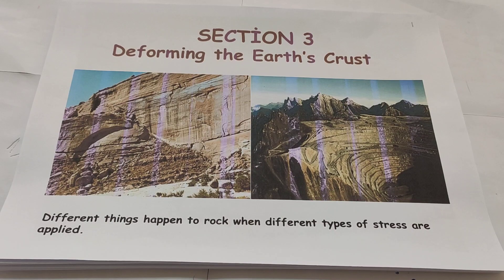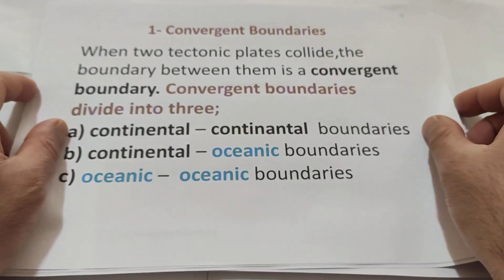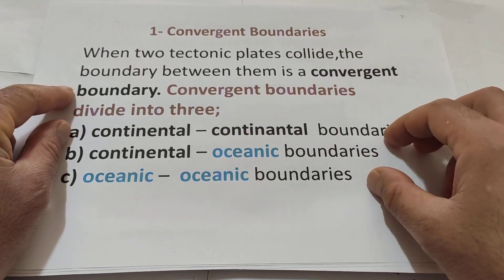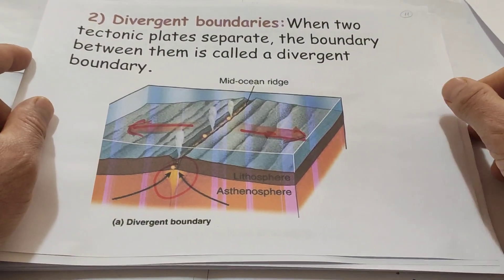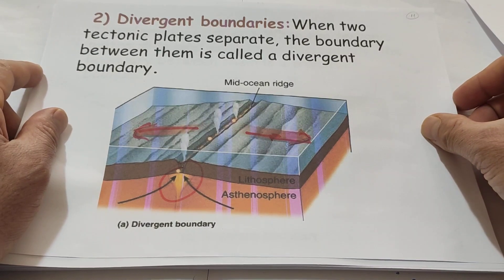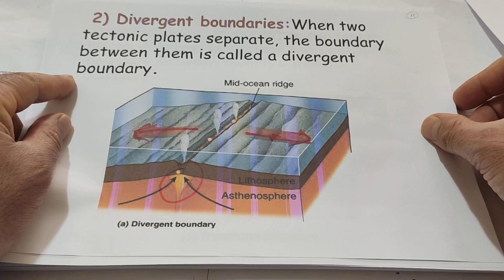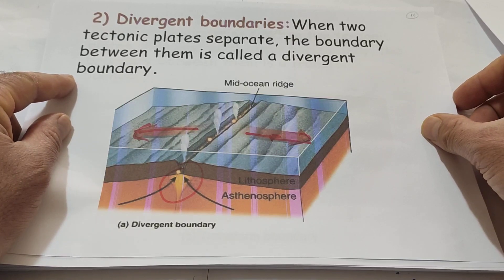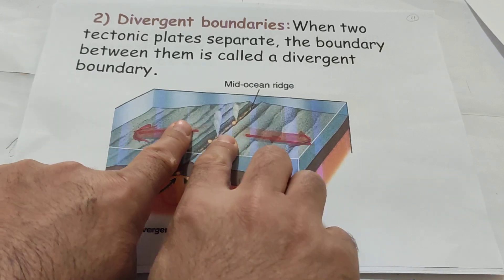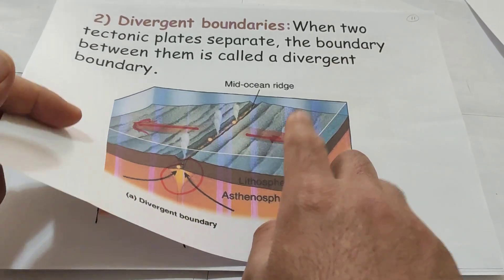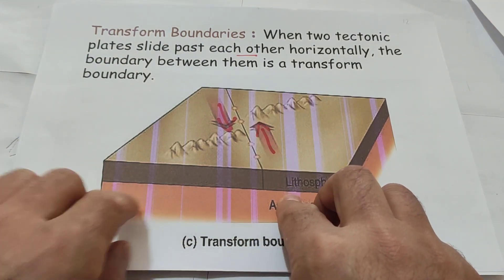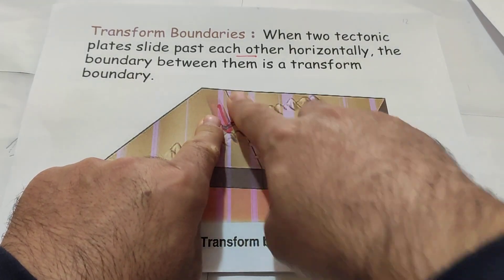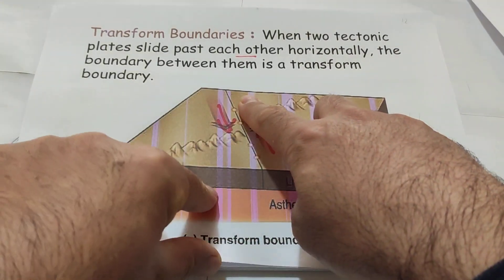Section 2, students, we learned the boundaries — mostly boundaries. There are three kinds of boundaries, students. The first kind of boundary is the convergent boundary. The second kind of boundary, students, is divergent boundaries — when two tectonic plates separate, the boundary between them is called a divergent boundary, with two layers going to opposite sides. And the third kind of boundary is the transform boundary, where the layer of earth moves horizontally.